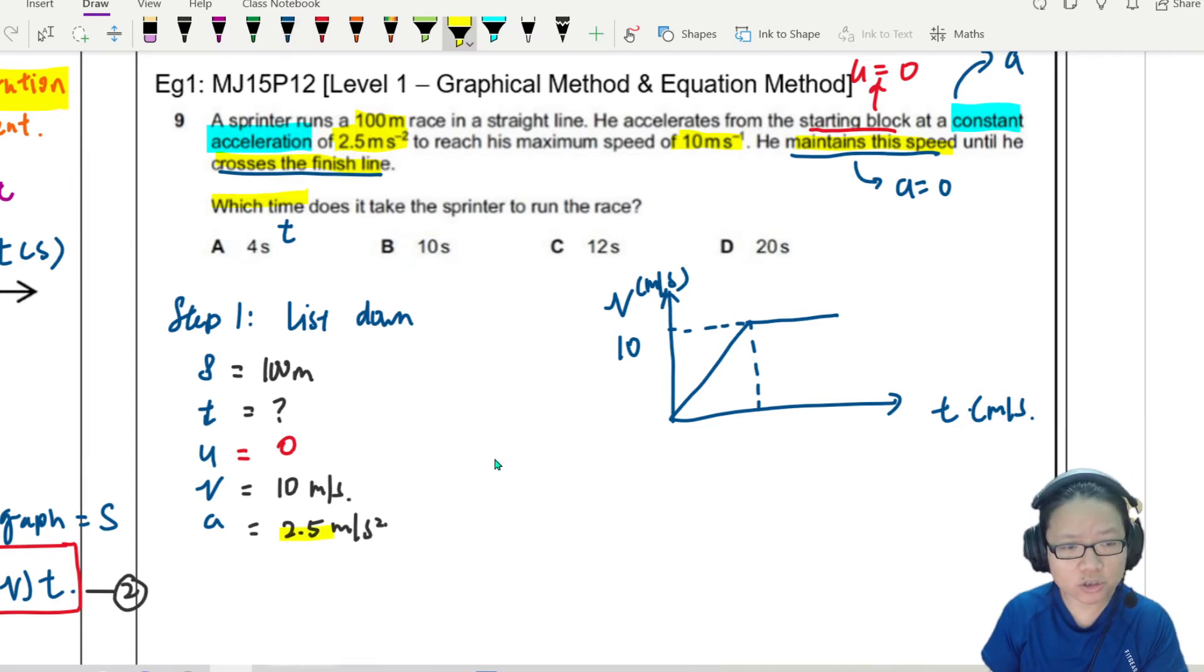What's the first problem? Acceleration is not constant. So this 2.5 meter per second squared is only from here to here. How long is this? I don't know. So in that case, this is not 100. I'm pretty sure it's not 100. I'm pretty sure it's less than 100.